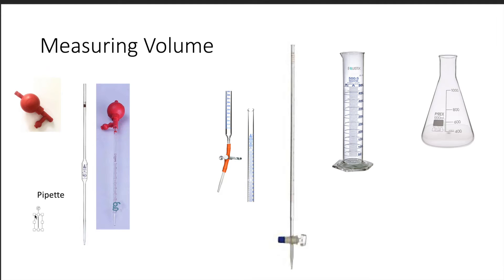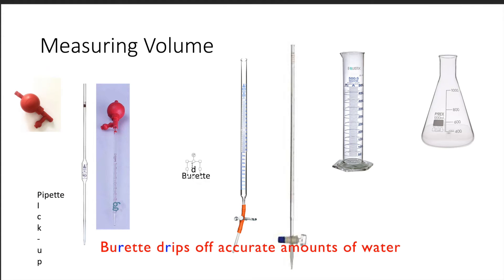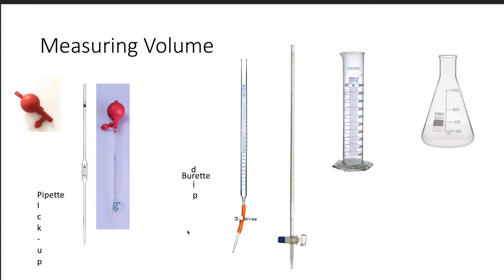Measuring volume involves a wide variety of containers. The pipette and buret are the more interesting ones. The pipette's job is to pick up accurate amounts of liquid; the buret's job is to release accurate amounts of liquid. In secondary school, the pipette is calibrated to fixed volumes like 20.0, 21.0, or 25.0 cm³, and the buret has an accuracy to the nearest 0.05.